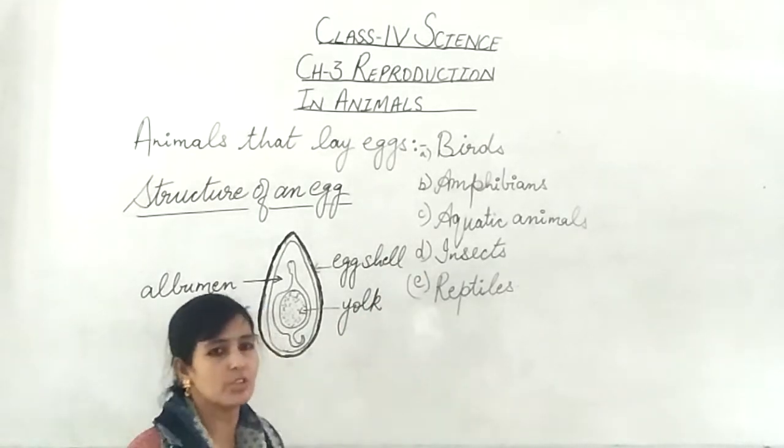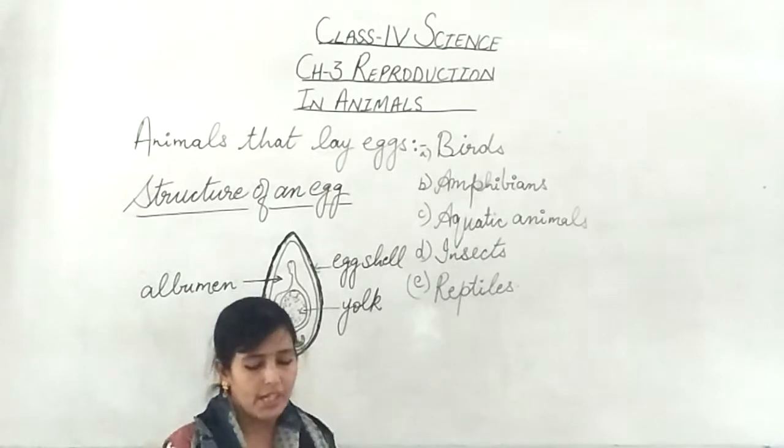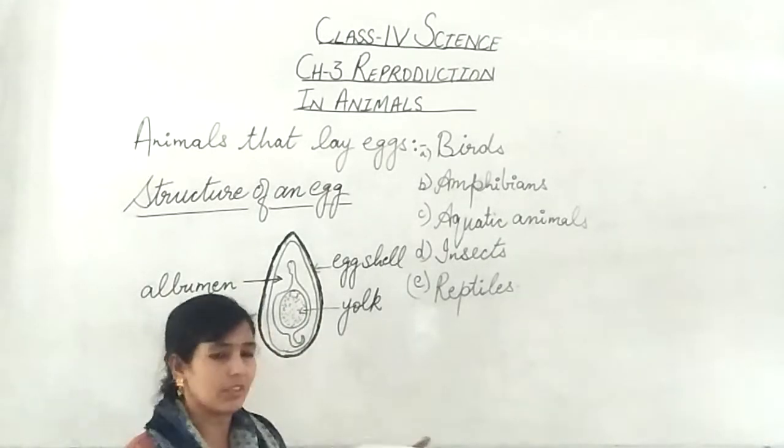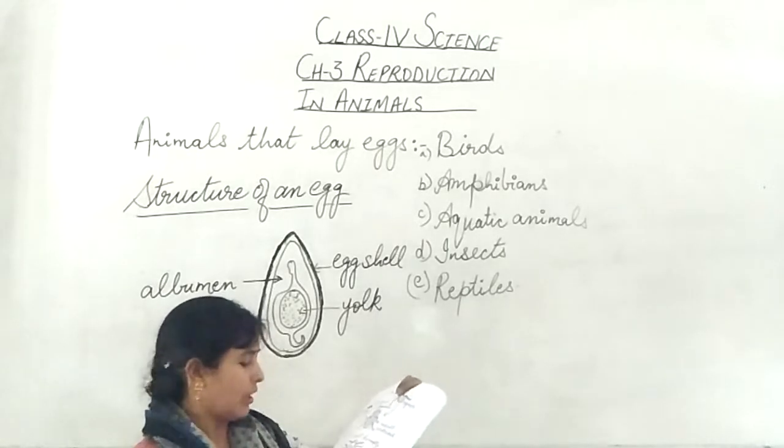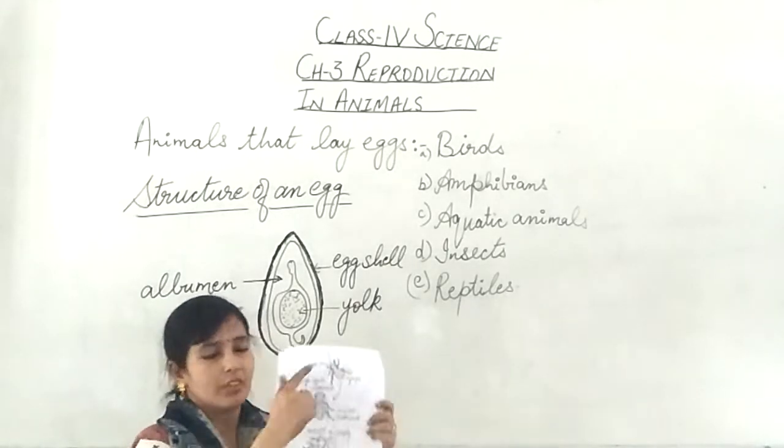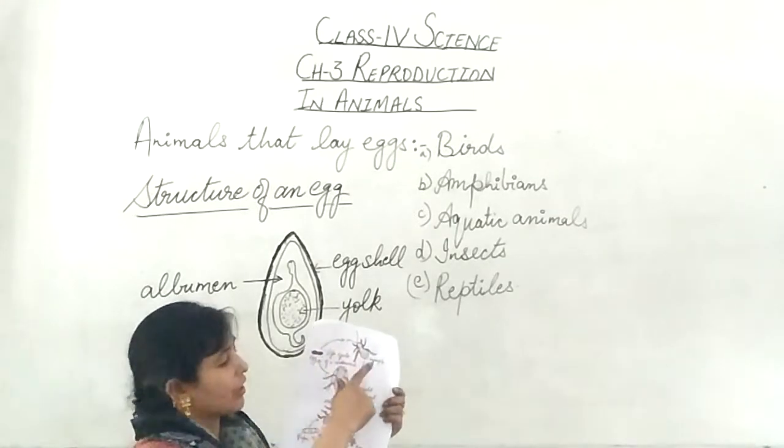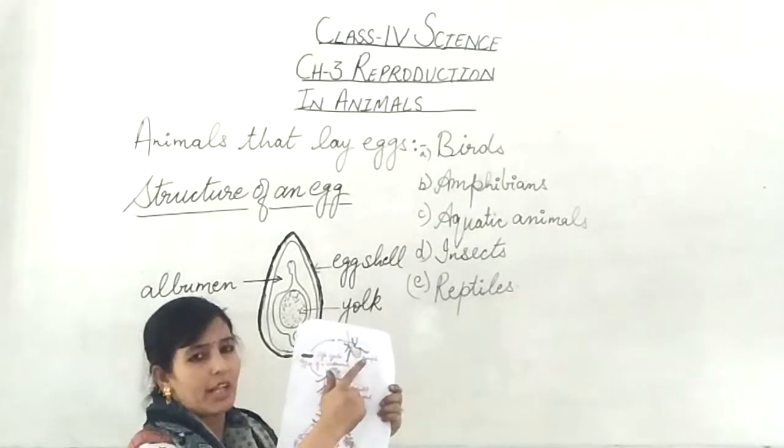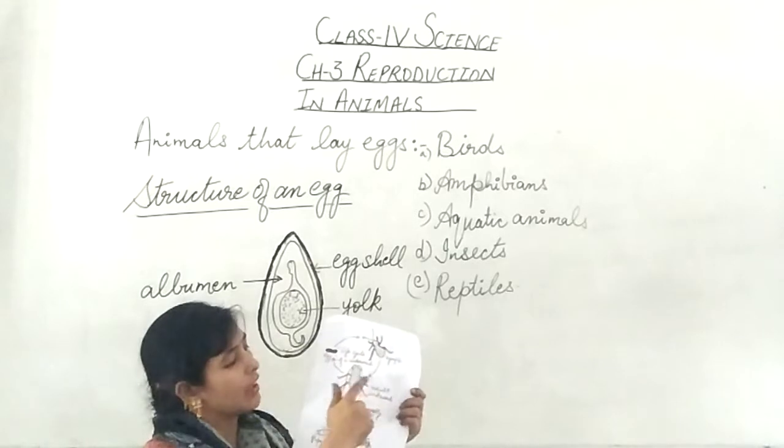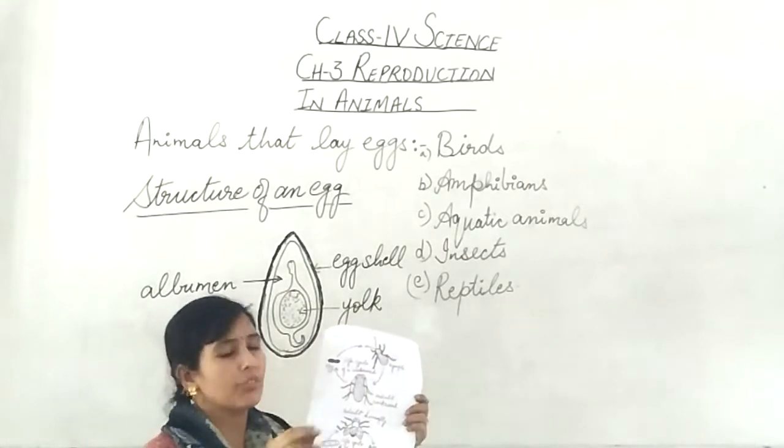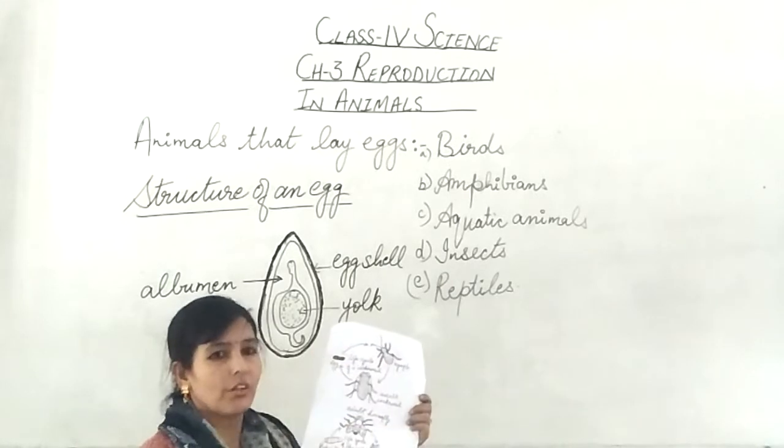Next is the insects. Insects are also the animals that lay eggs. Let's talk about the simplest insect that is the cockroach. The cockroach has three stages. The egg, after hatching, is converted into a small structure that is known as nymph. After the nymph it converts into an adult cockroach. This is the life cycle of a cockroach.